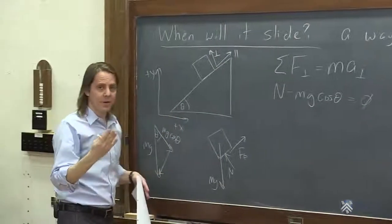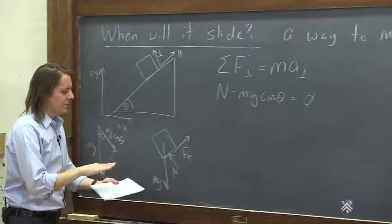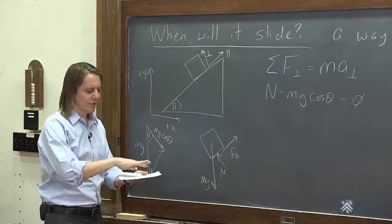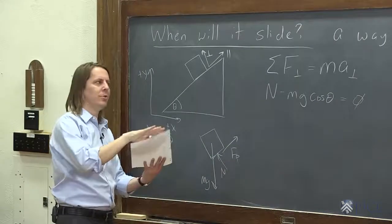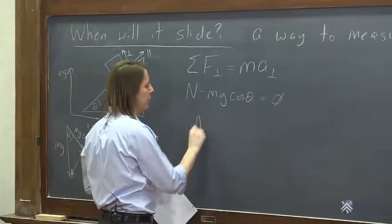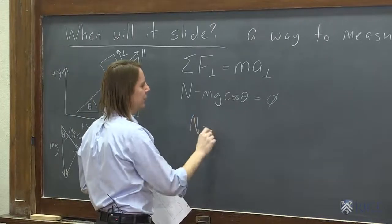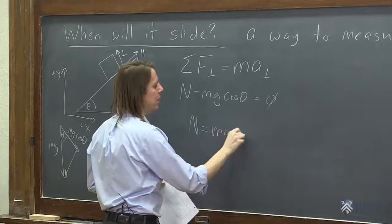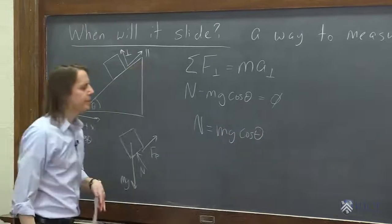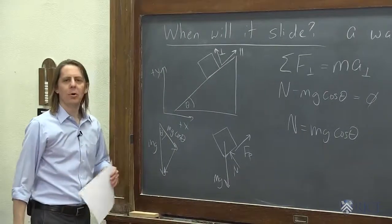This is, in fact, how you find the normal force when you're not just sitting on a flat surface. You know, when everything's level, the normal force just equals mg. But when you're tilted, it gets smaller. So N, in this case, the normal force just equals mg cosine theta. So that's what we learned from the perpendicular.